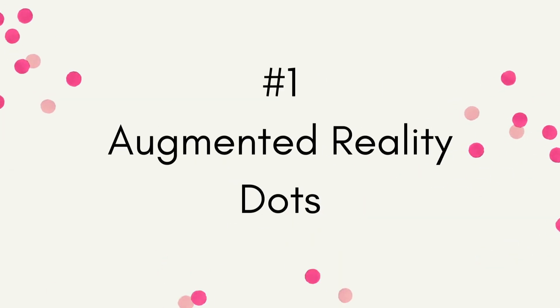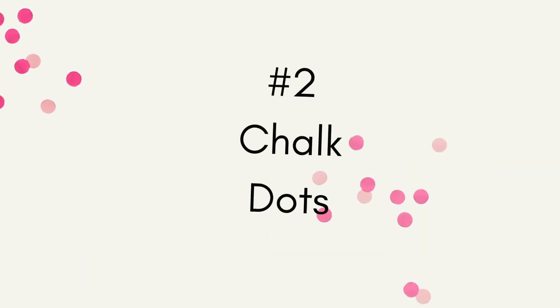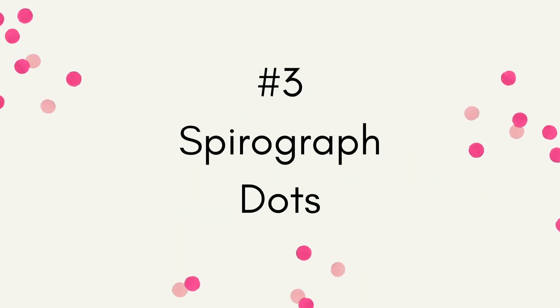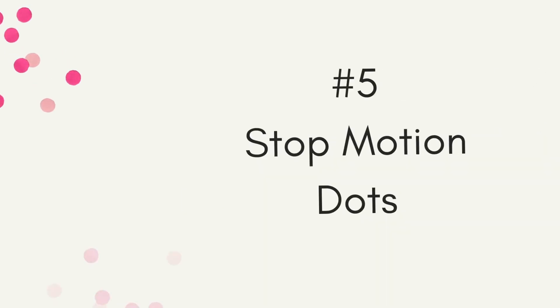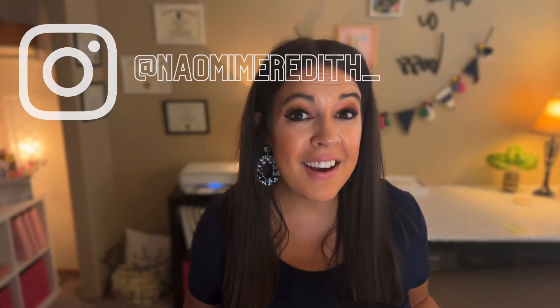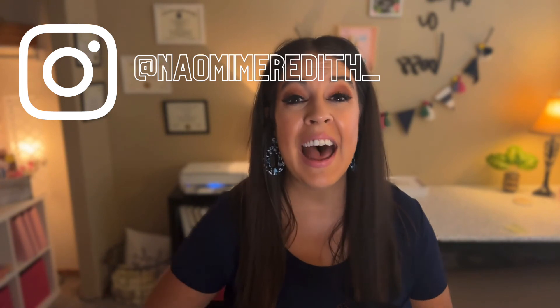This would be a great way to introduce stop motion animation — it's a pretty easy activity but will take a lot of patience and collaboration to make it all work. As a recap, here are the five STEM-inspired Dot Day activities you can try in your classroom: first, augmented reality dots; next, chalk dots; third, spirograph dots; fourth, dot launchers; and fifth, stop motion animation dots. All of the resources I mentioned will be linked in the show notes so you don't have to remember them. And if you try any of these in your classrooms, tag me on Instagram at Naomi Meredith underscore. I would love to see how I helped inspire creativity in your classroom.